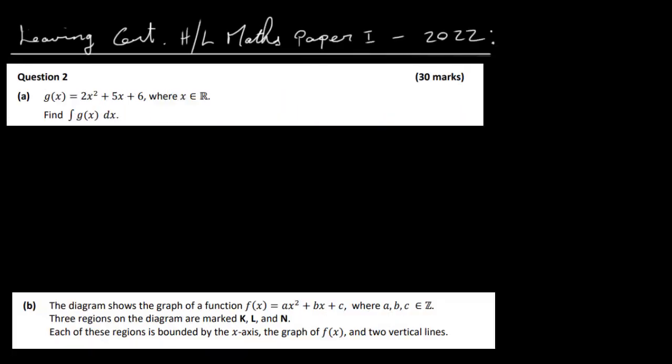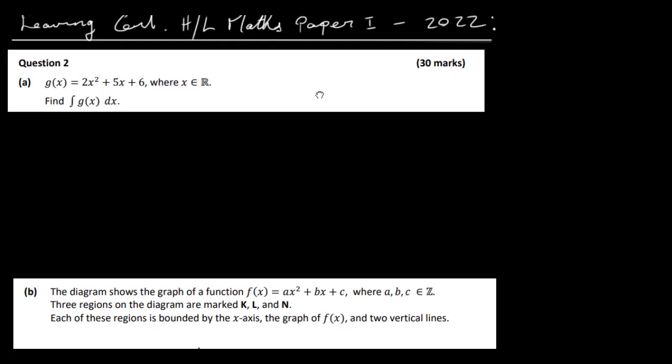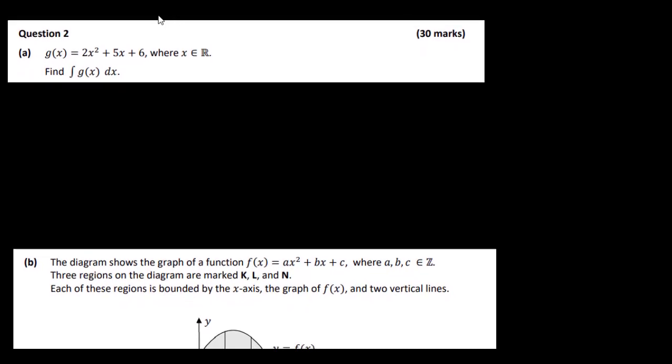This is the Leaving Certificate Higher Level Maths Paper 1, 2022, Question 2. In part A we have g of x, which is equal to 2x squared plus 5x plus 6, where x is real. Find the integral of g of x with respect to x.